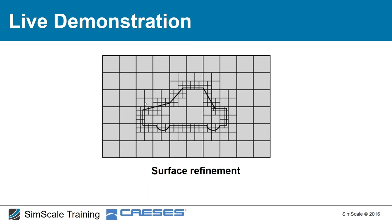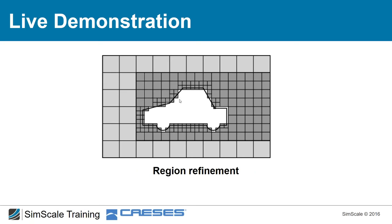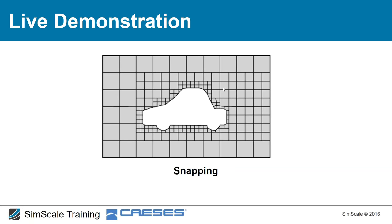Region refinement is used because we expect large velocity changes near the object, so finer mesh there gives better accuracy — and this is critical: the way you design your mesh has a big influence on the quality of your simulation results. Finally, boundary layer cells (special near-wall elements) can be added for refined resolution near surfaces.